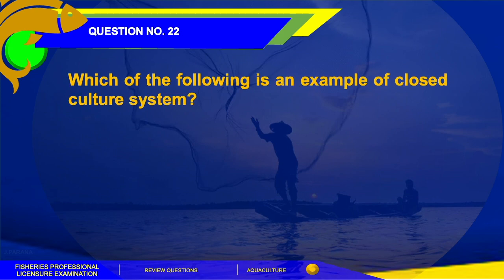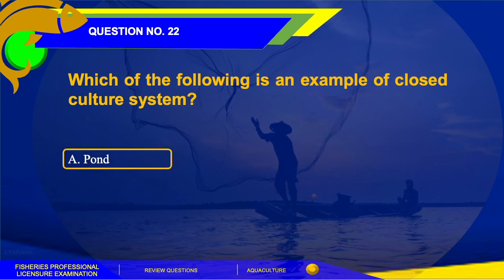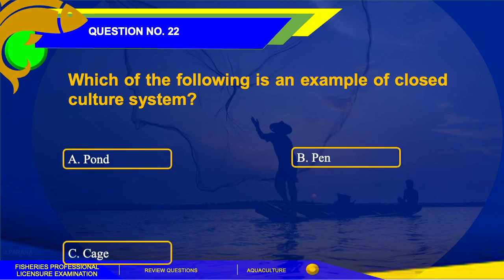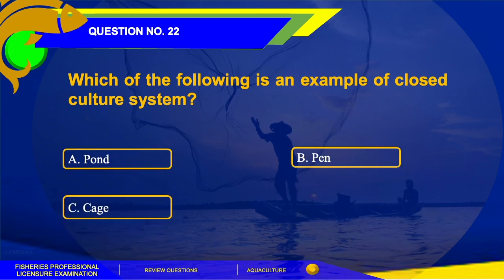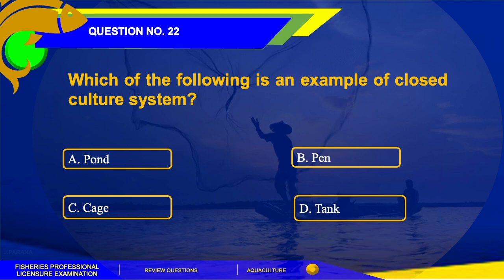Number 22. Which of the following is an example of a closed culture system? A. Pond, B. Pen, C. Cage, or D. Tank.